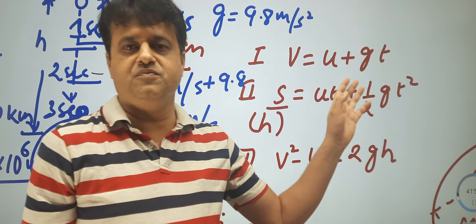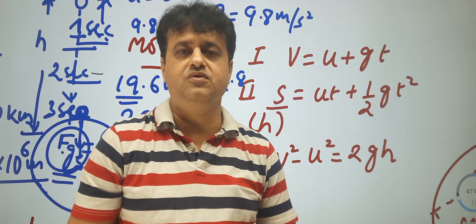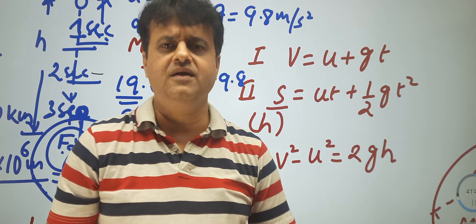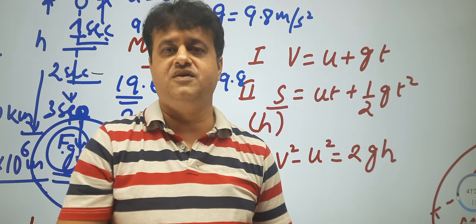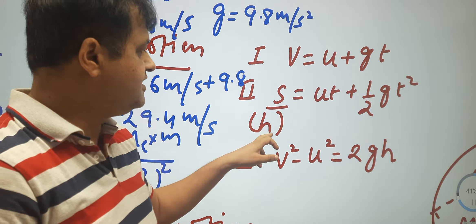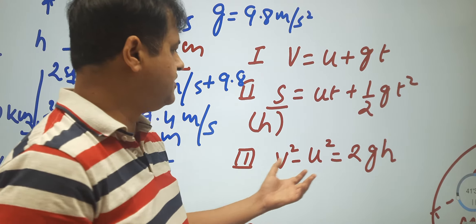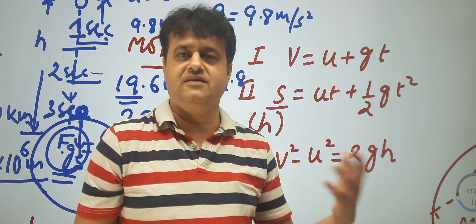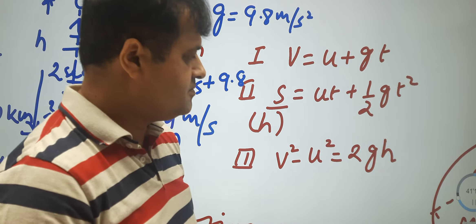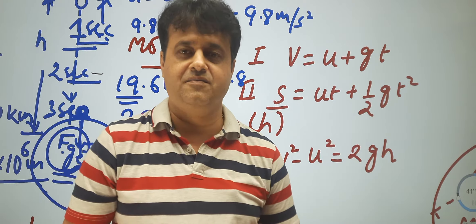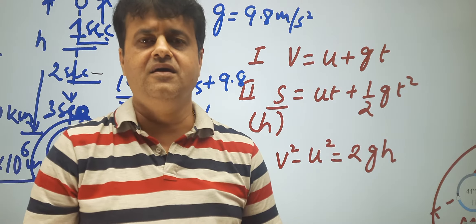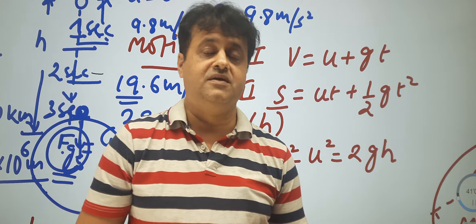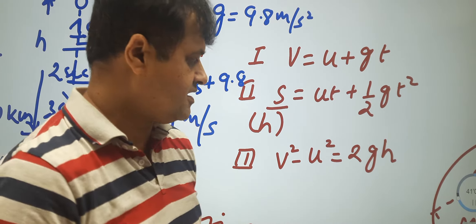In the equations of motion, we replace 'a' with 'g': V = U + GT, S = UT + ½GT². Sometimes S (displacement) is the height of the object from the surface, so S is replaced by H. Similarly, V² - U² = 2GH, where H is the displacement S, and G is acceleration due to gravity. Before moving further, let's do numericals based on free fall and equations of motion — these are very important and often appear in exams.